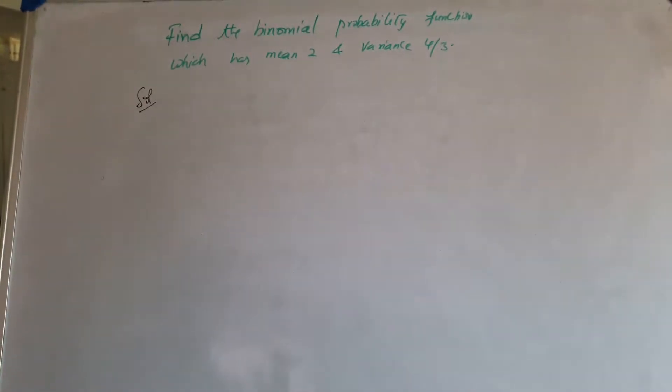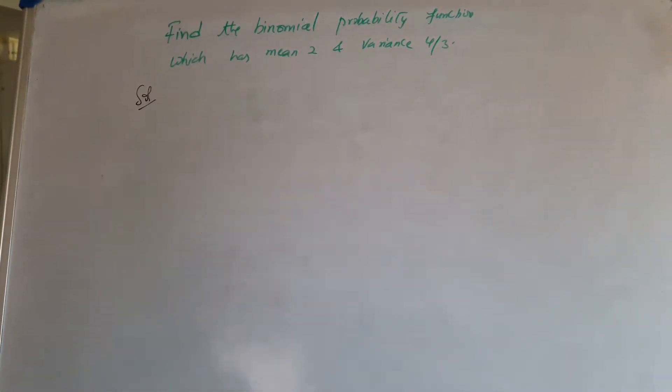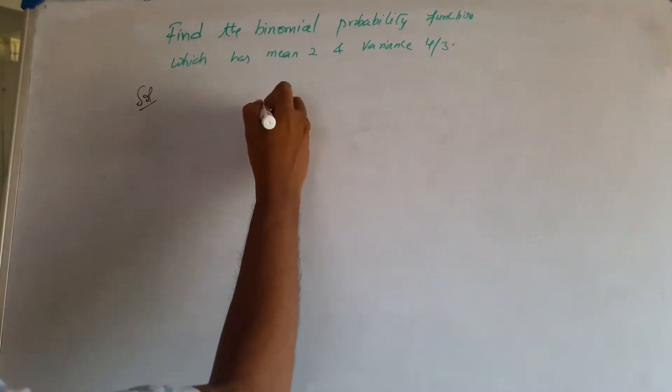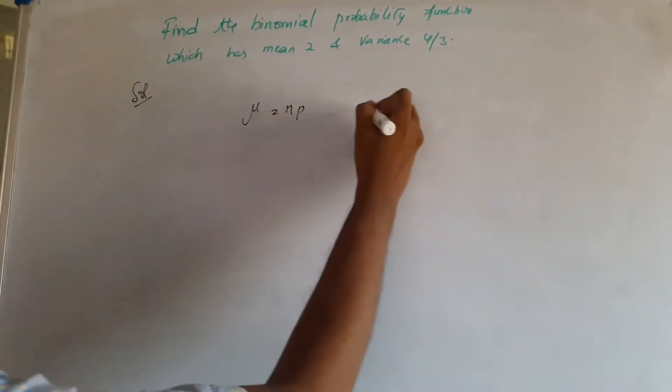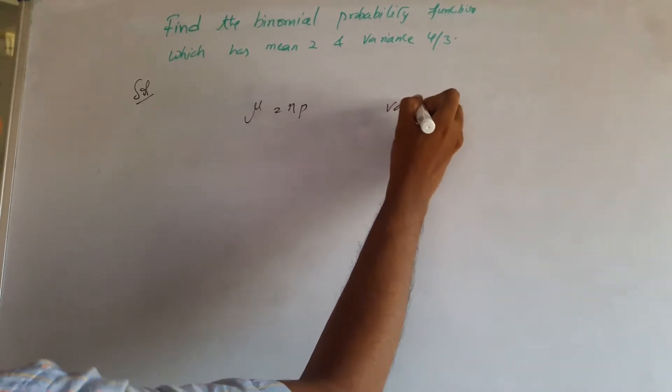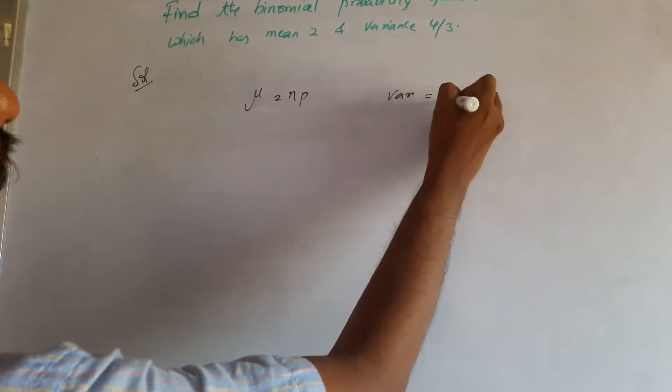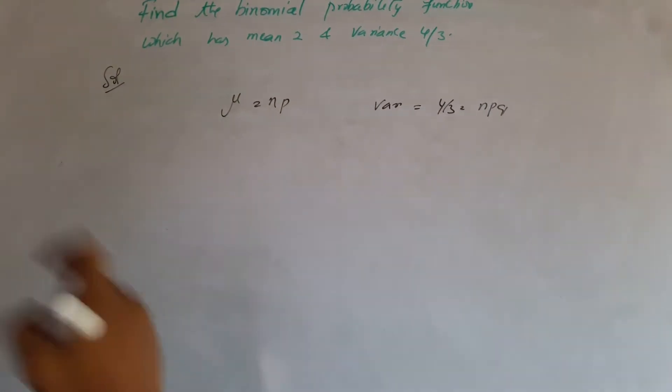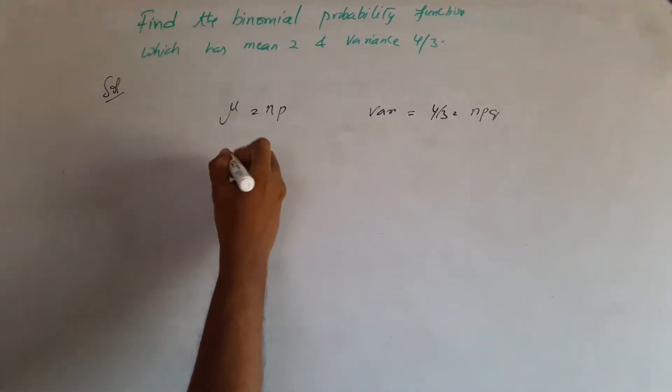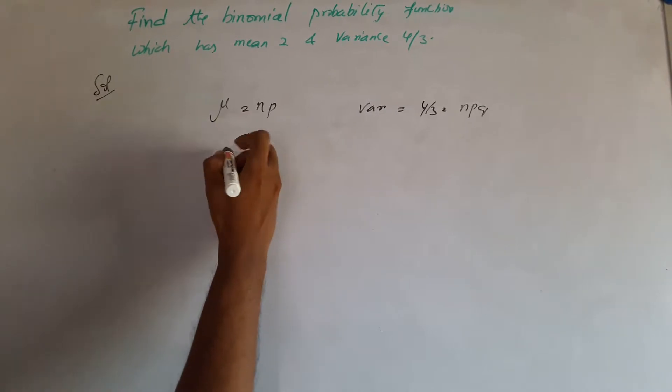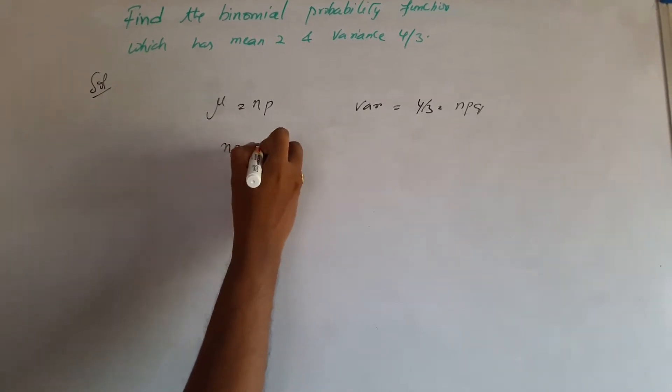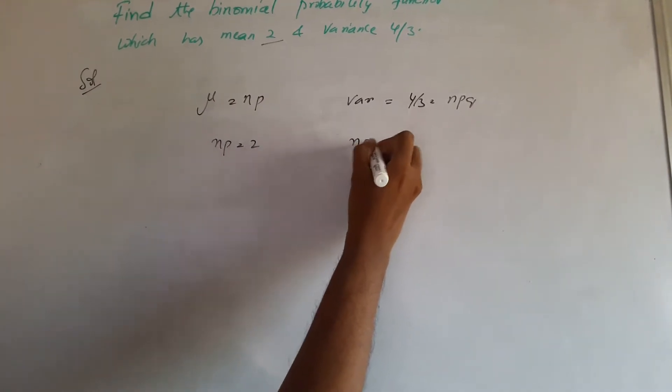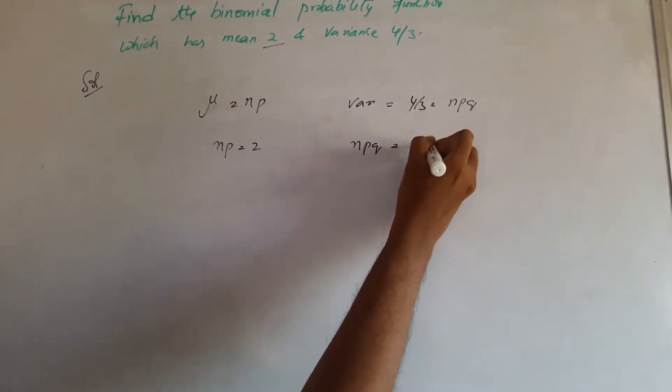In the binomial probability function, now how is it? Mu is equal to np and the variance is 4 by 3, which is npq for binomial distribution function. So we have np as 2, which is the mean, and the variance npq is 4 by 3.